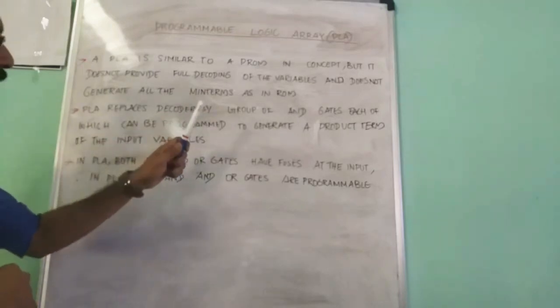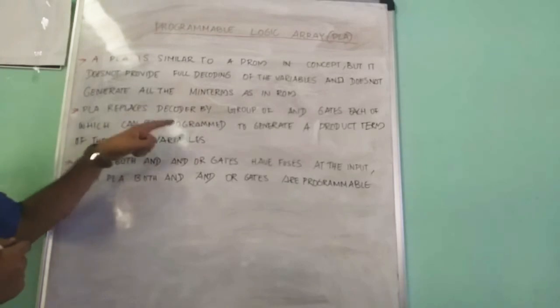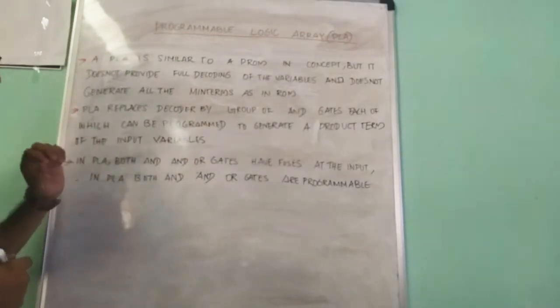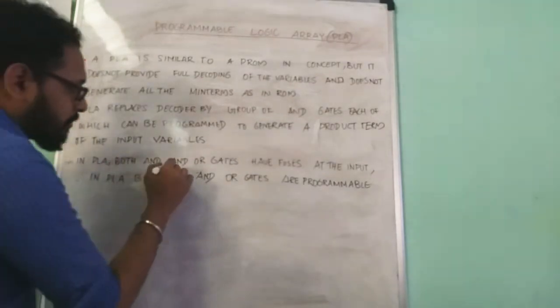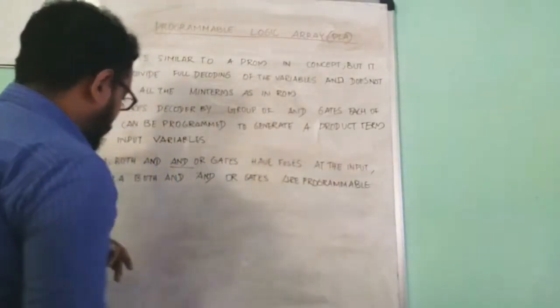PLA replaces decoder by group of AND gates, each of which can be programmed to generate a product term of the input variables. In PLA, both AND and OR gates have fuses at the input.